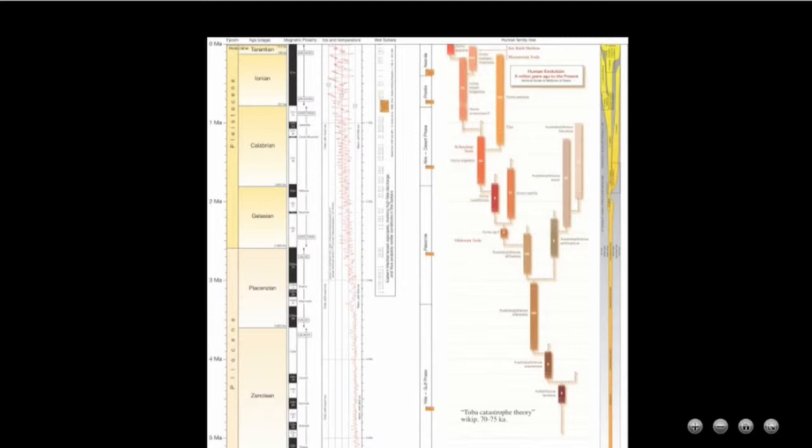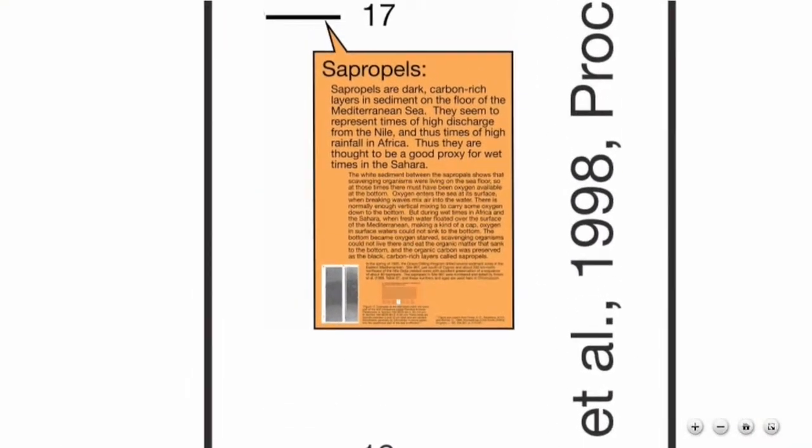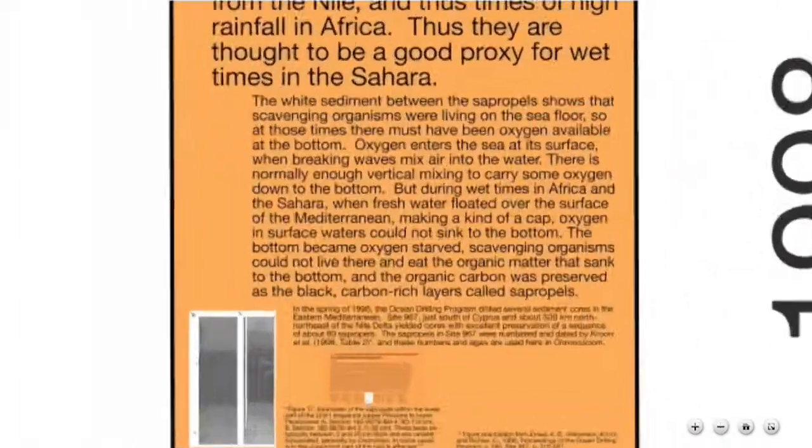But Chronozoom doesn't just make finding time periods easy, it makes it easy to learn about them too. Chronozoom can embed information directly into the timescales. We're looking at the last 5 million years again. Let's say we want to learn about this topic. By zooming into this box, we can immediately start reading about it. If you want to learn more, just keep zooming in.